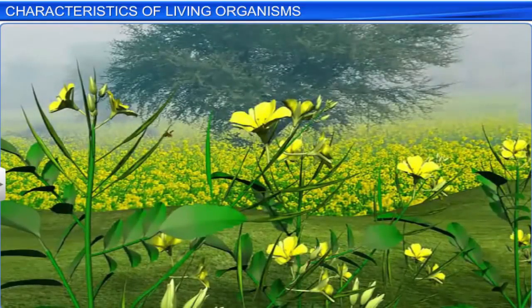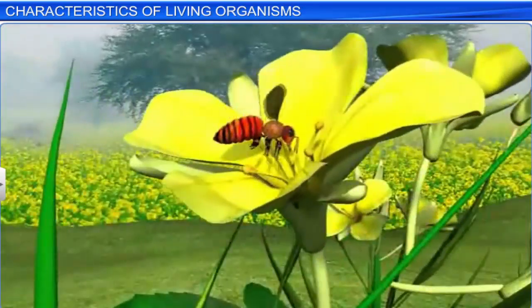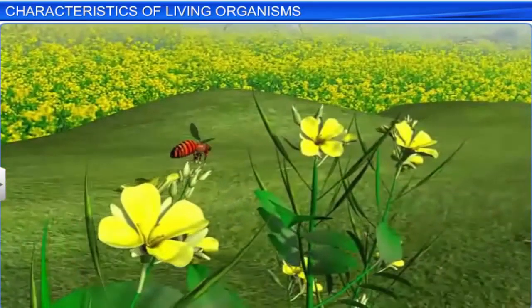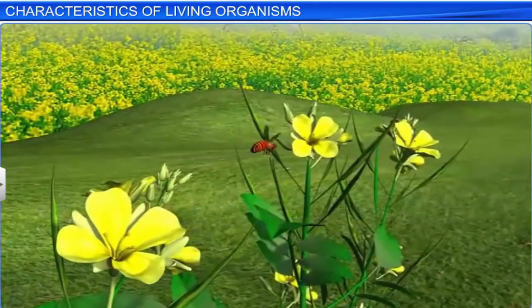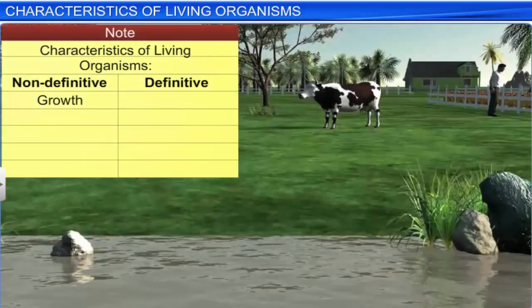However, certain organisms such as sterile worker bees are not capable of reproducing. But that doesn't mean they are non-living. Reproduction is, therefore, not a definitive characteristic of the living.